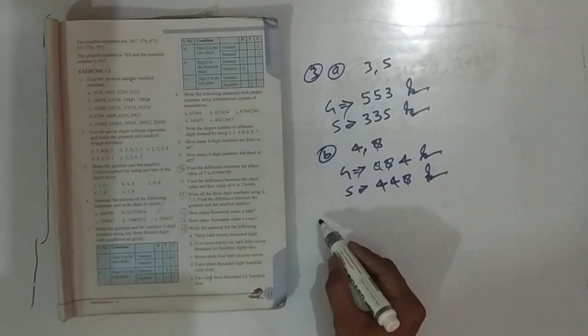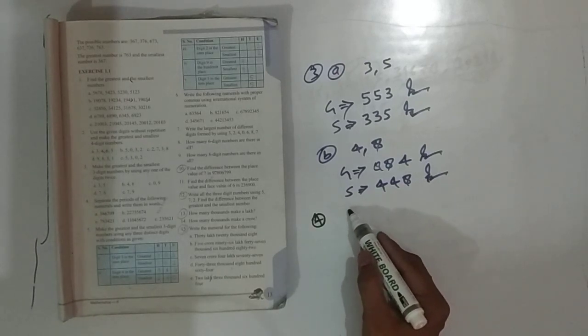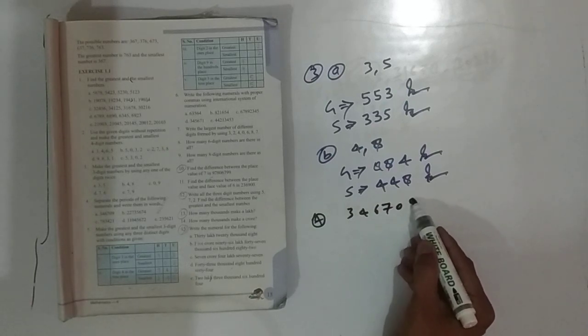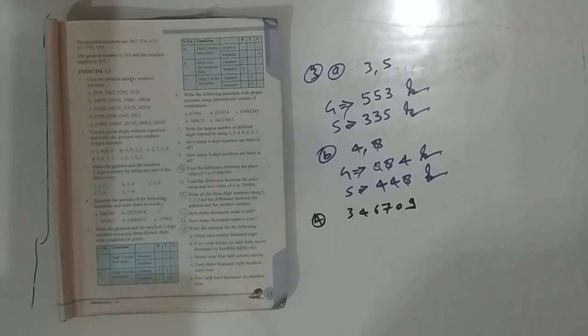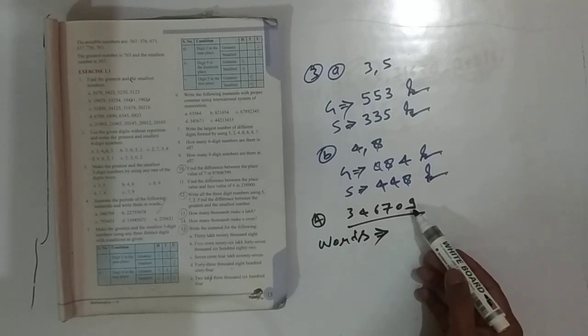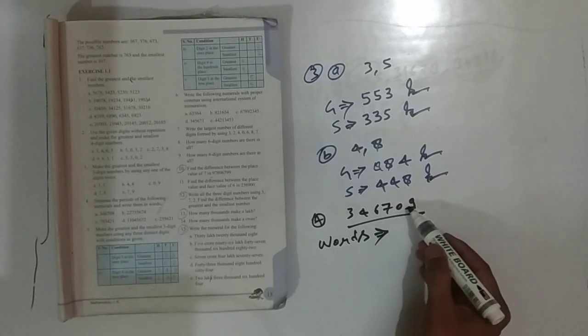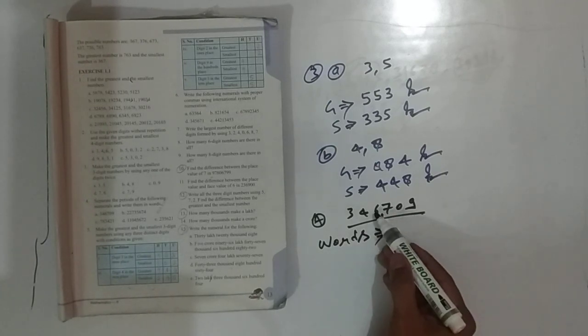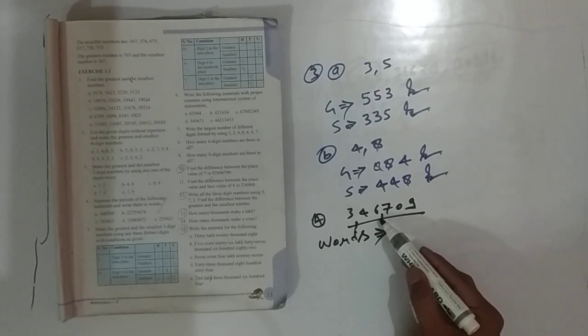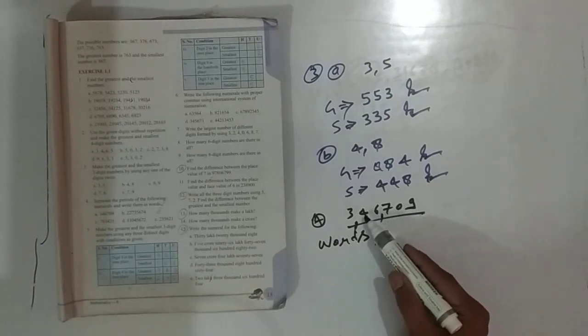Next question number 4: Separate the period of the following numerals and write them in words. 3, 4, 6, 7, 0, 9. You have to write this number in words. So you have to write it in the place values: ones, ten, hundred, thousand, ten thousand, lakh. You have to write it in the last place, last three digits, then you have to write it in the second place, and then two digits.